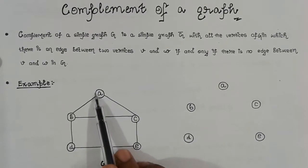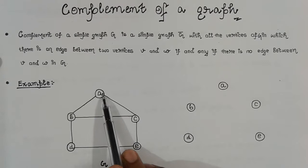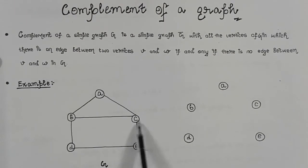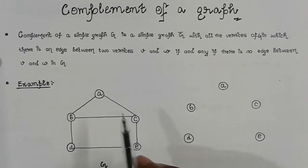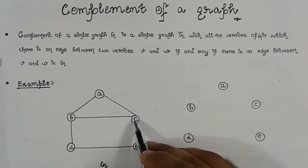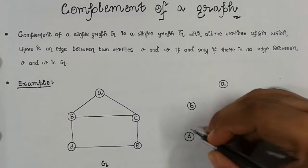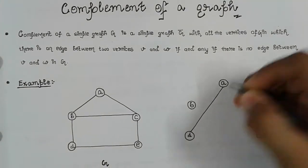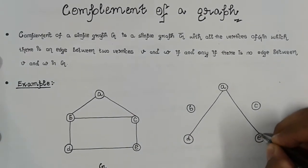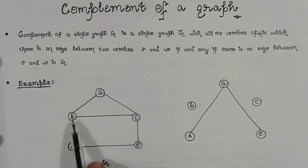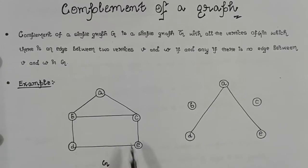For example, you can see that vertex A is connected to vertex B and vertex C in graph G. So the complemented graph will not have edges to these two vertices, but it will be connected to the vertices which are not connected, which are D and E. So we will connect A to D and then A to E.